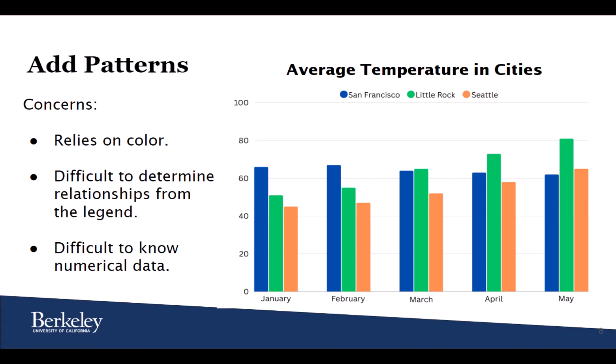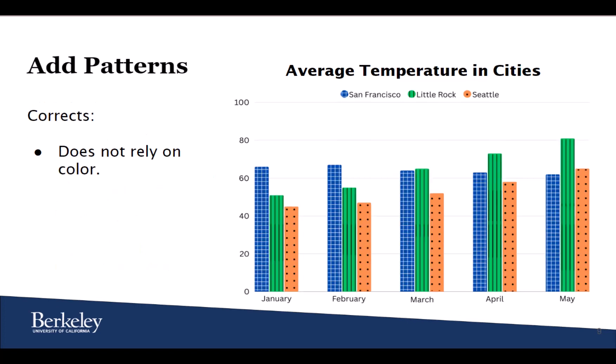Adding a pattern to your graphic can help your audience better understand your information. In this example, we have a bar graph showing the average temperature in three different cities from January to May. The graphic currently relies on color to distinguish the information, making it difficult to determine the relationship with the legend and difficult to know any numerical data. If we add a pattern to each city's information, we can better distinguish which bars represent which cities, making it easier to understand this bar graph.